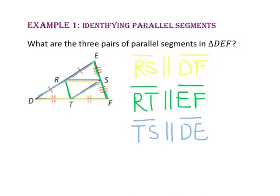So, side RS is parallel to side DF, side RT is parallel to side EF, and side TS is parallel to side DE.